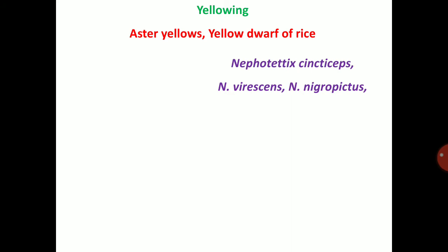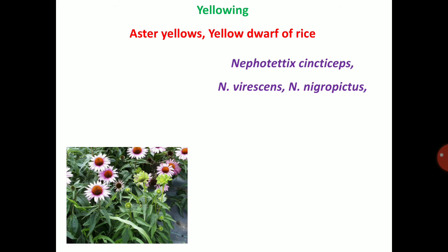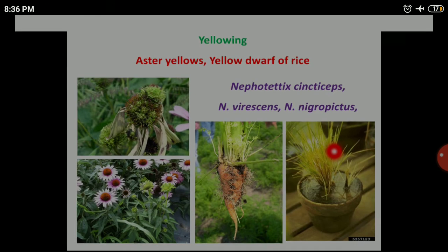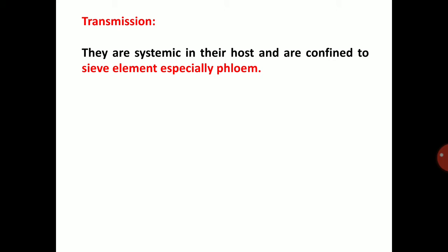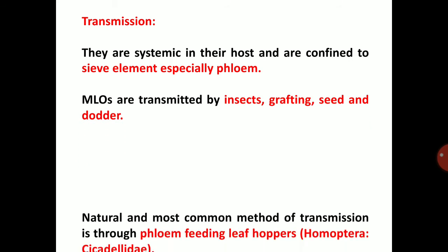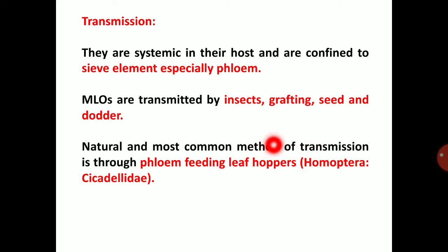Yellow dwarf of rice and aster yellows — one of the important diseases of rice is yellow dwarf of rice caused by phytoplasma. Candidatus Phytoplasma mainly transmitted through Nephotettix cincticeps or Nephotettix virescens or Nephotettix nigropictus. MLOs are transmitted by insects, grafting, seed, and dodder. The natural and most common method of transmission is through phloem-feeding leafhoppers, for example, Homoptera: Cicadellidae.